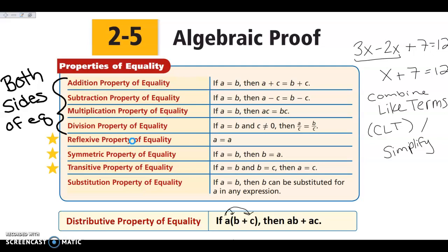The next properties we're going to look at are the reflexive, symmetric, and transitive properties. The reflexive property is anytime something is equal to itself — so 7 equals 7, or x equals x. The symmetric property is like: if I said x equals 7, then 7 equals x. This is why when you're solving equations, if your final answer looks like 7 equals x, I'm okay with that — you don't have to flip it, because of this property.